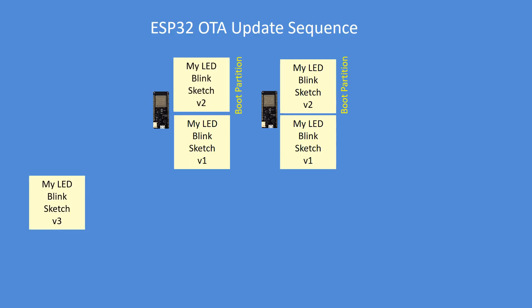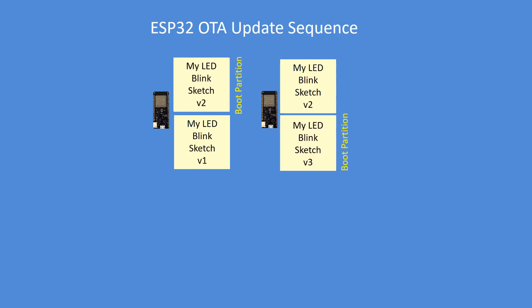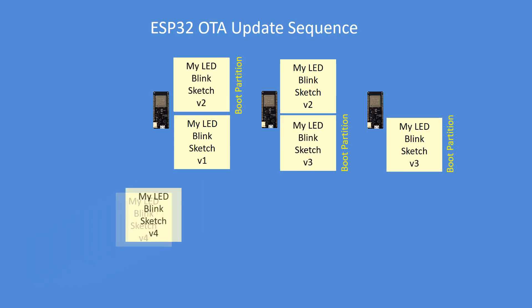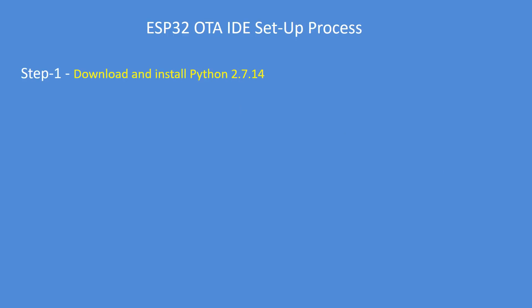Then I come along with version 3 code and upload that. Now my boot partition gets moved to my new sketch, leaving the old sketch in place on the OTA2 partition. Then I upload a fourth sketch and the boot partition gets moved again. So your code gets swapped between partition 1 and 2 all the time — that's how the over-the-air updating actually functions.